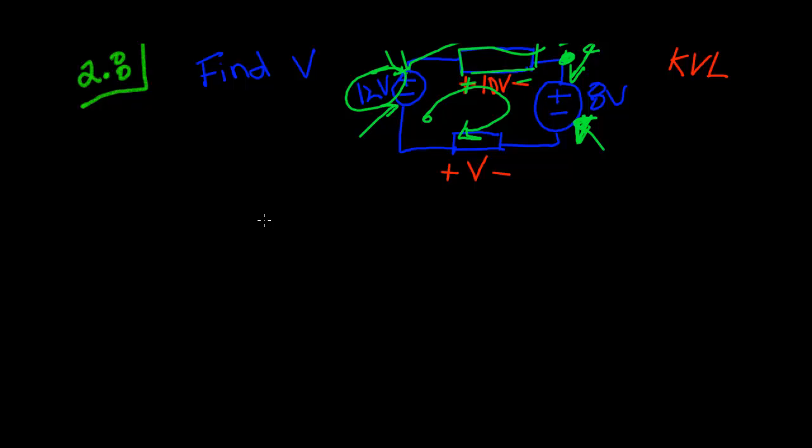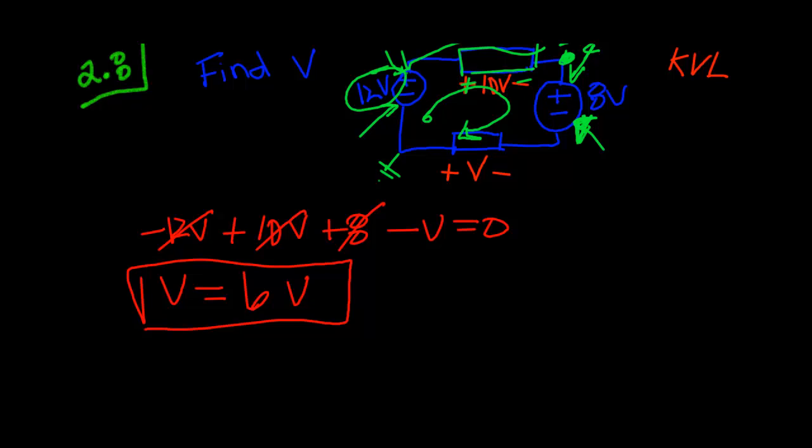So in this case, again, we can redraw our circuit if we're using this as a reference, and we can change the colors to maybe red here. So we have minus 12 volts, and then you've got plus 10 volts, and then you've got plus 8 volts, and then you've got minus V is equal to 0. Move V to the other side, so you've got V is equal to, let's see, 8, 10, so then you've got minus 2, and then you've got plus 6, so you've got 6 volts here. That's what that would equal. That was pretty simple.